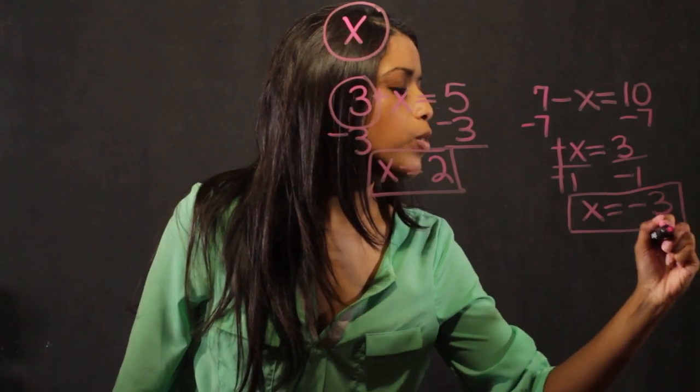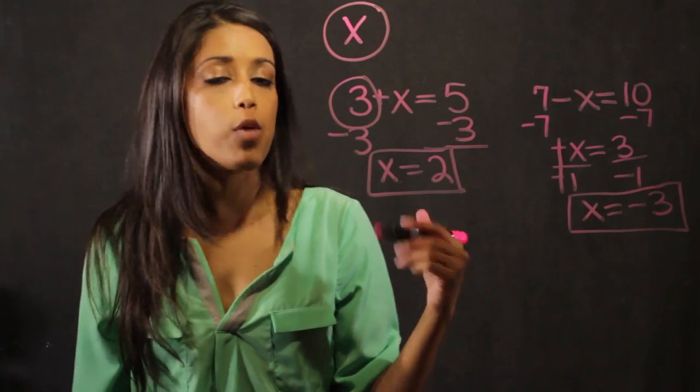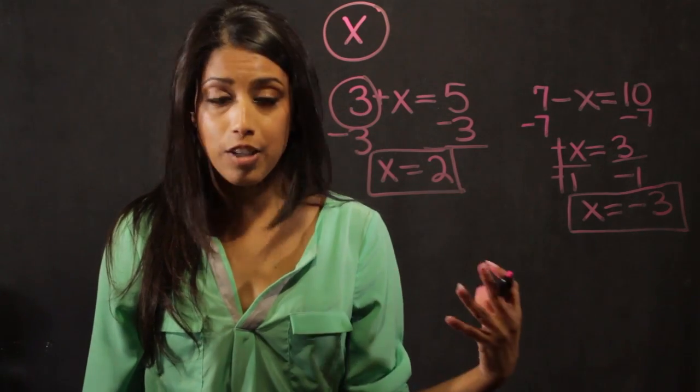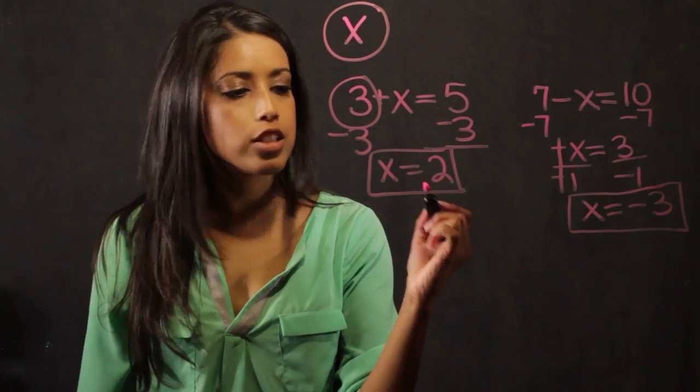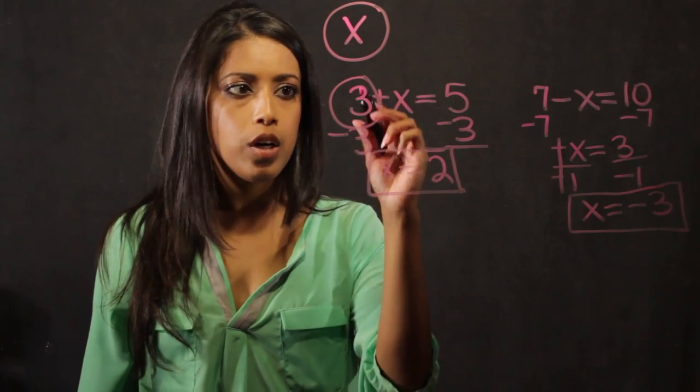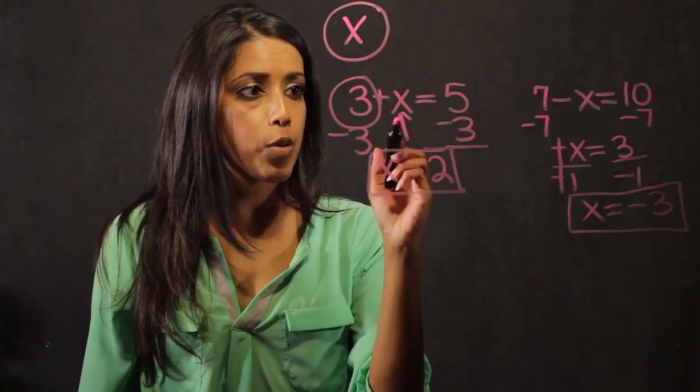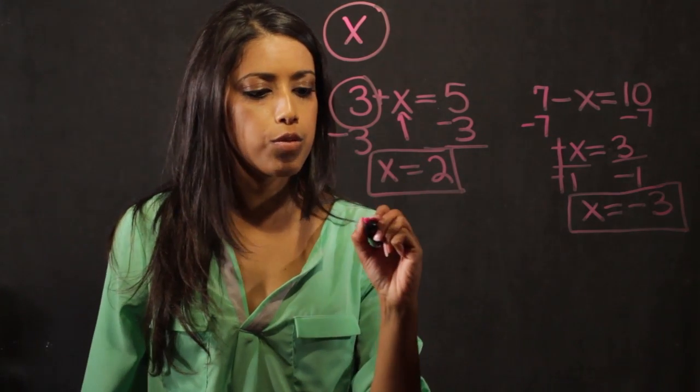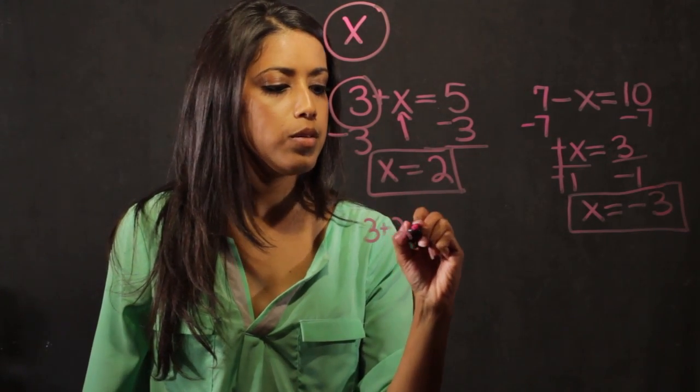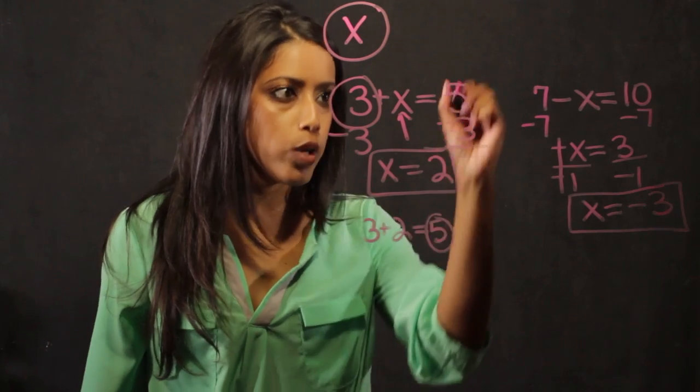The nice thing about working with equations and figuring out what the variable is is you can actually check your answers. Here we said that the answer for x was 2, so I put the number 2 into the equation, and I say, is that true? So 3 plus 2 gives me 5, which is what we wanted.